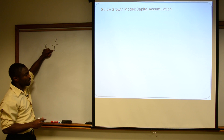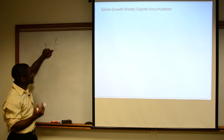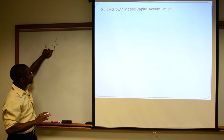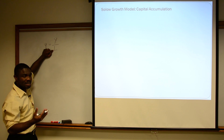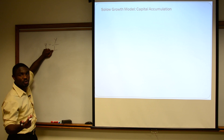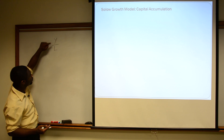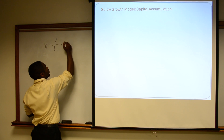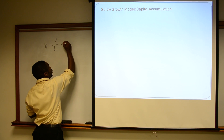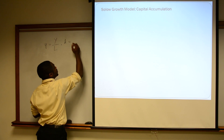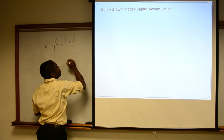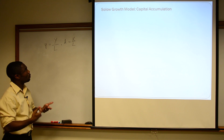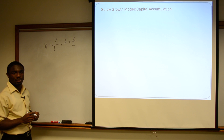Our labor units here, we can measure either in terms of hours, but for simplicity, let's just think about it as per person. So this is our output per person. And similarly, we're going to think about our capital K as our aggregate capital divided by L — that's our per person capital.